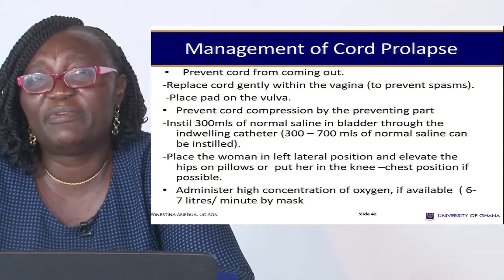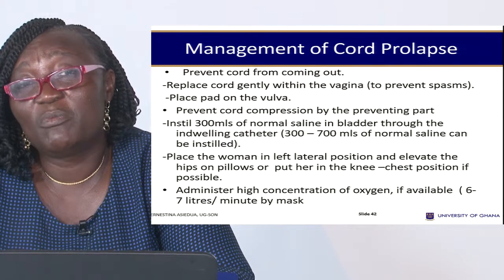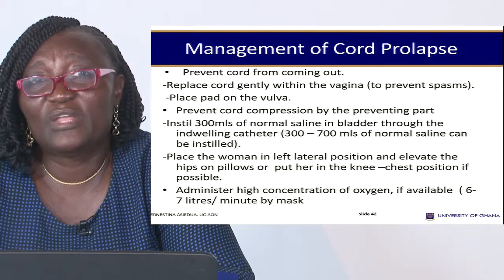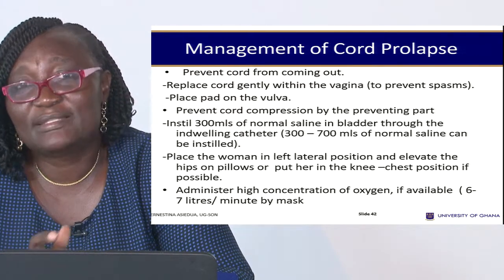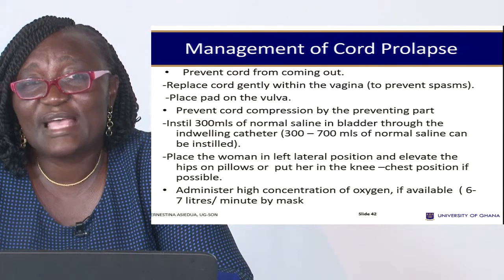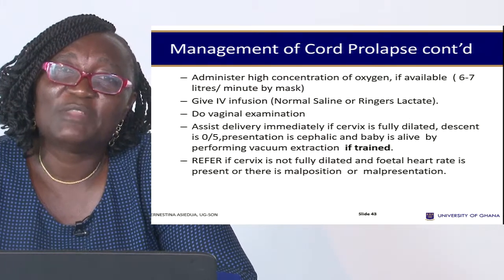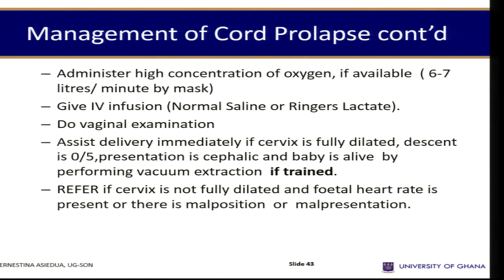Prevent cord compression. You may instil 300 mls of normal saline into the bladder through an indwelling catheter to elevate the presenting part. Place the woman in the left lateral position and elevate the hips on pillows, or the knee-chest position if possible, to lift the weight off the cord. Administer high-concentration oxygen to the mother — once maternal oxygen saturation is high, the baby will also receive oxygen.